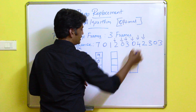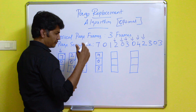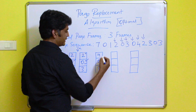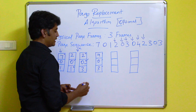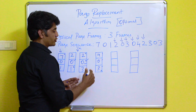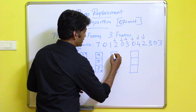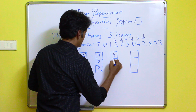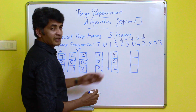Next, page 2 is required. The operating system verifies which page is not used for the longest period of time, comparing pages 4, 0, and 3. Page 3 is identified as the page not used for the longest period of time, so page 3 is replaced by page 2. The frames are now: 4, 0, 2.